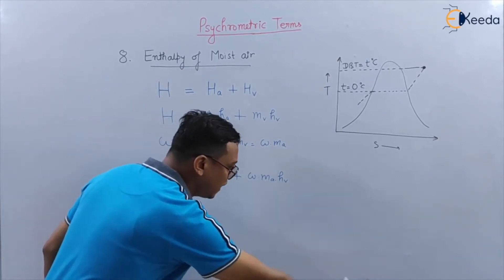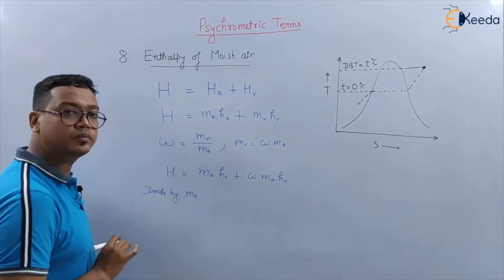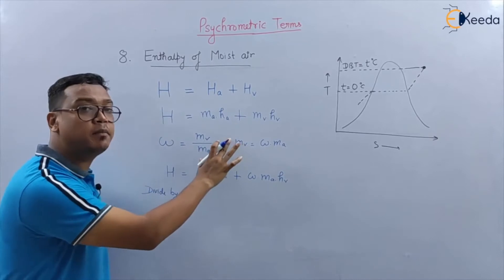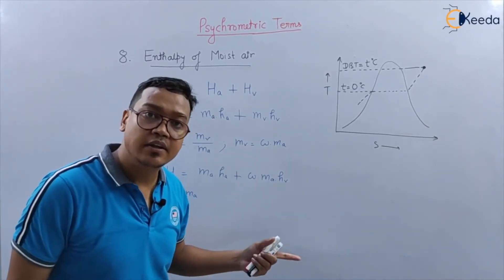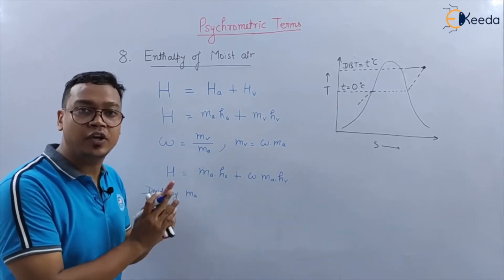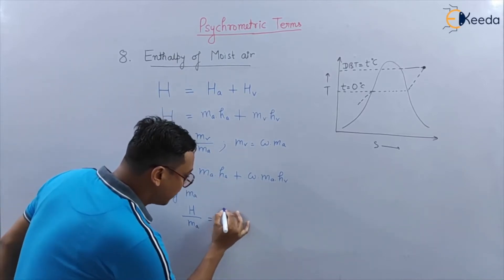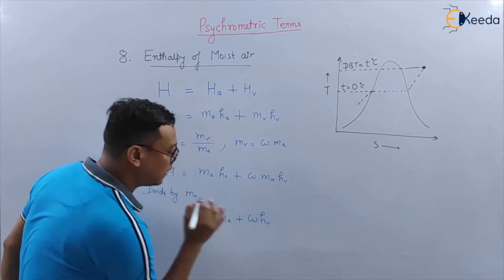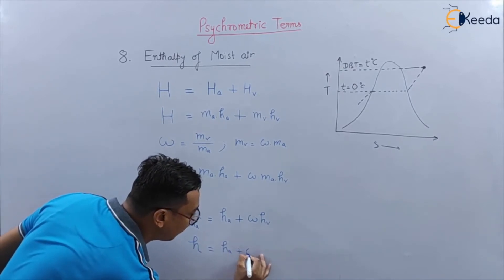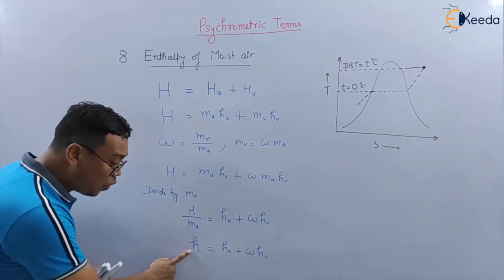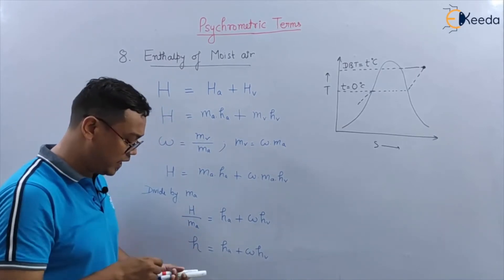I will divide this equation by MA. Listen very carefully to understand this property, because it is very important when doing load calculations or when understanding air conditioning processes. This is a very important property. So, small h — specific enthalpy — equals H divided by MA, which gives h equals HA plus Omega times HV. This is the total specific enthalpy of moisture, i.e., enthalpy of moisture per kilogram of dry air.